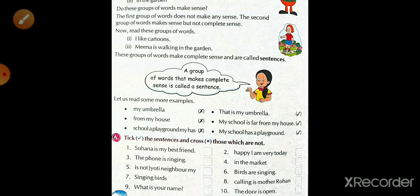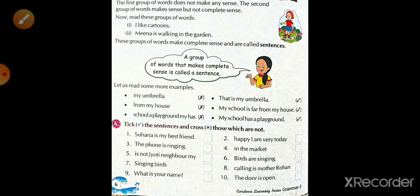Now, we have exercise A. Tick the sentences and cross those feature notes. हमें right का tick mark बनाना है, जो sentence है उसके सामने, और cross की sign बनाना है कि जो sentence नहीं है. So, first one is, Suhana is my best friend. We can get easily proper sense. So, we put here right mark.